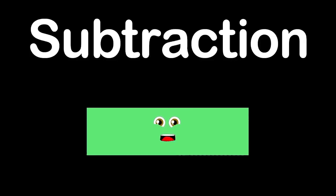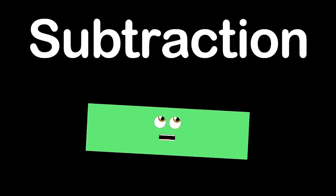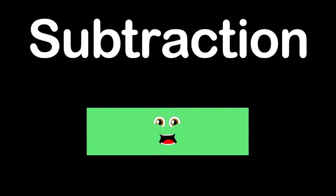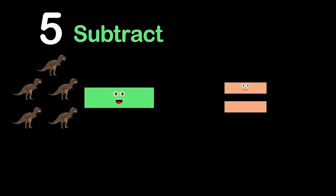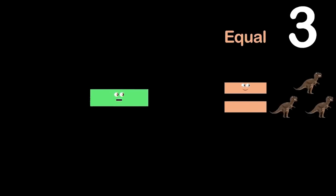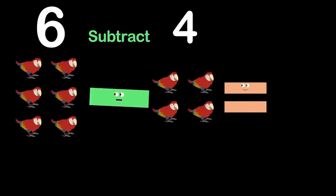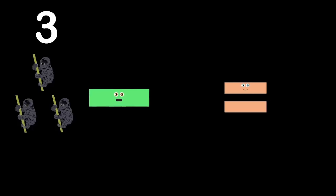But before we move on to a subtraction equation, the equal symbol's introduction will complete our calculation. Hi, I'm the equal symbol. It's nice to meet you. Up to the right of a math equation, and this is what I do. I take the value of an equation from the right of me, and show it's equal in value or amount to my left, you see. Here we have five T-Rexes. But if you subtract two, the final amount equals three.